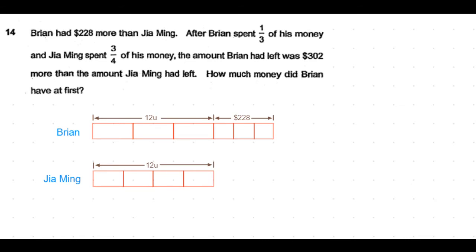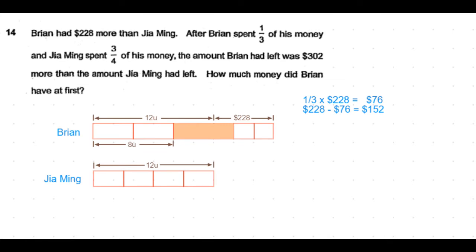Brian spent 1/3 of his money, so 1/3 of 12 units is 4 units. The remaining money would be 8 units. And 1/3 of $228 is $76, so the remaining money would be $228 - $76 which is $152.